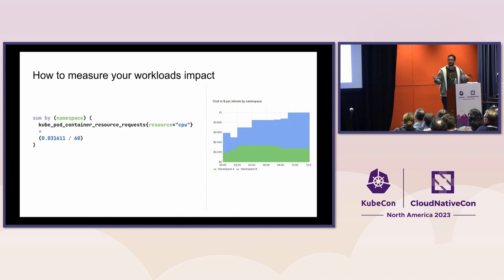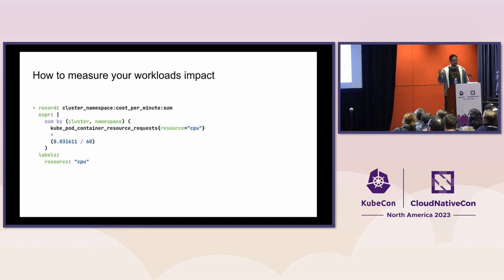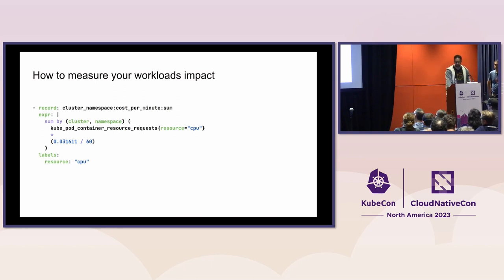This is useful — you could run it today and get actual data on the cost of your namespace. But for longer time ranges, you'll want to fall back on a recording rule. In this case, we call it cluster_namespace_cost_per_minute_sum, using the same expression from the explorer, and adding the resource label of CPU. If you want to do memory, change the resource to memory, find the hourly price of memory, and do a little conversion since bytes and gigabytes don't always match up.